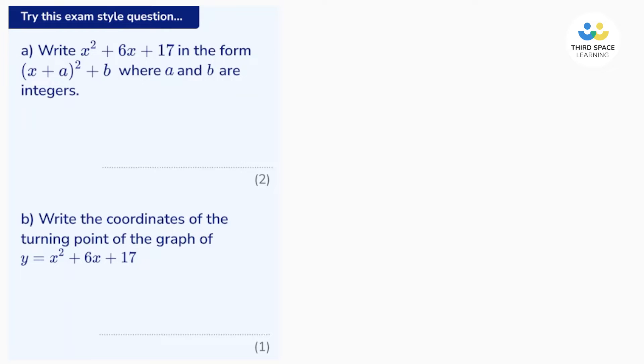Let's have a look at the question. It says write x squared plus 6x plus 17 in the form (x + a)² + b where a and b are integers.